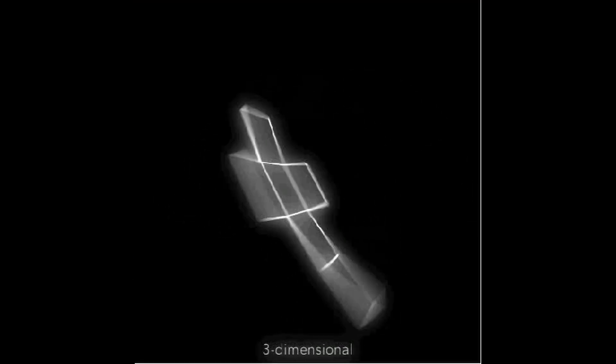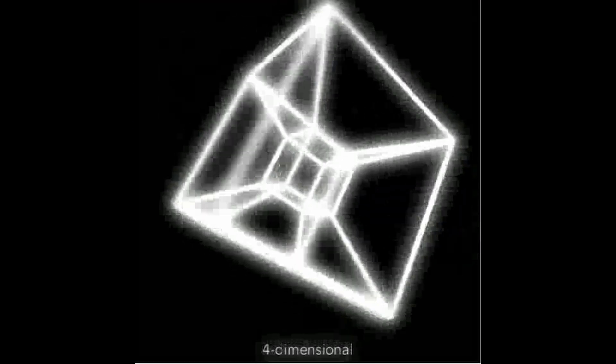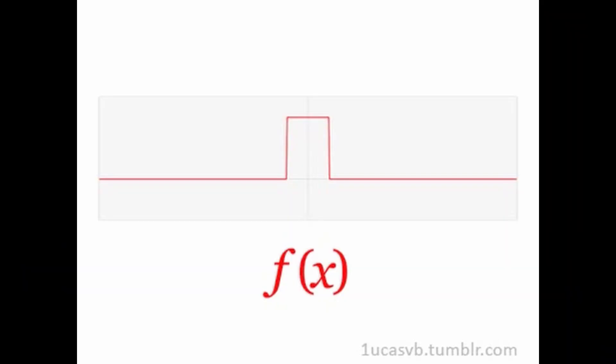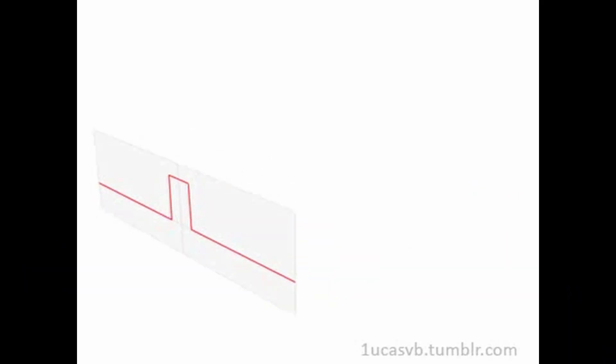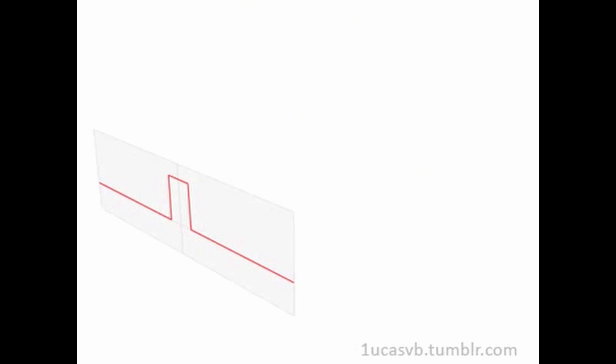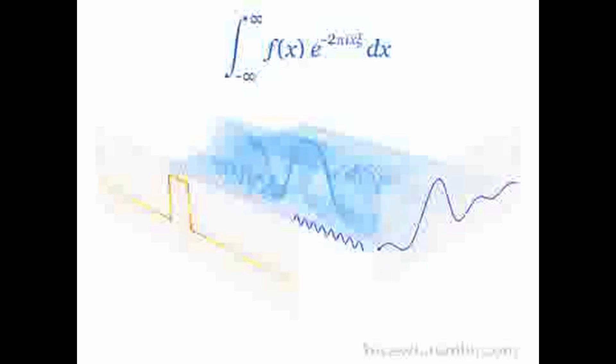A point of an algebraic variety that is not singular is called regular; an algebraic variety with no singular points is termed non-singular or smooth. Consider the plane algebraic curve given by y² − x²(x+1) = 0: the origin (0, 0) is a double point of this curve and is singular because a single tangent cannot be correctly defined there.